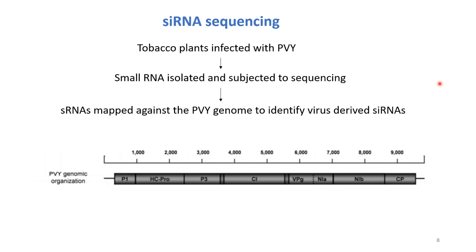Tobacco plants were infected with PVY strain vulgar, small RNA was isolated and subjected to sequencing. Once I had the siRNA sequences and already knew the genome sequence, I mapped the siRNAs against the genome — first to confirm they are derived from the virus, and secondly to identify from which region they are generated. For example, some siRNAs are derived from the VPG region, but I found that many siRNAs were derived from the HCpro region, suggesting that the HCpro region is probably heavily targeted during natural infection. Using 500 to 600 bases from the HCpro region as a template would make the dsRNA more efficacious.